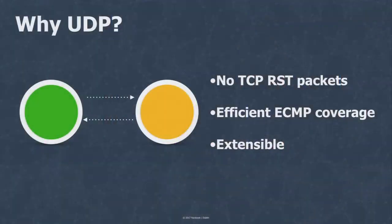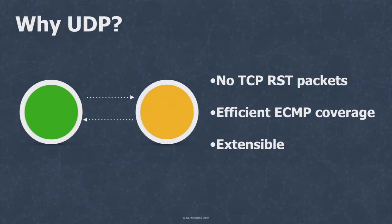So why UDP? Our use case was that we were polluting some metrics for service owners with TCP. Switching to UDP also eliminated the polarization problems we had with ICMP, and it's pretty extensible — meaning we can tweak it and add more things to the probe structure if we need to.